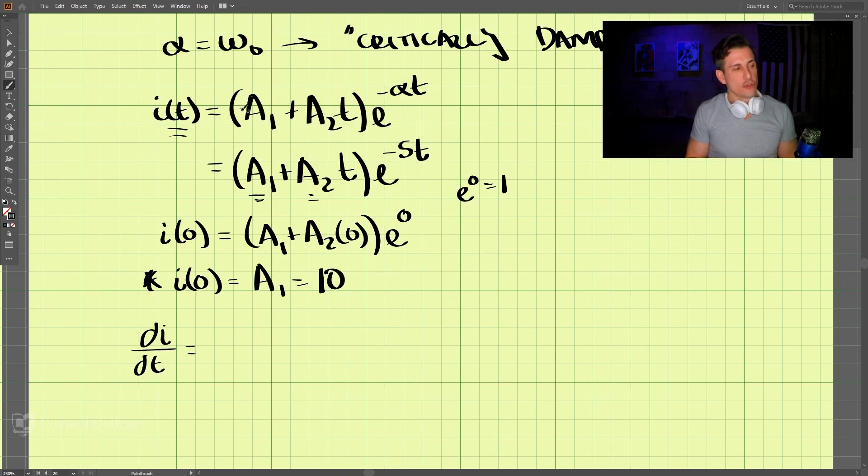So if we take the derivative of this equation, we get, so we have A1 times alpha times e to the negative alpha t plus the derivative of the first is A2 times the second alpha t plus the derivative of the second times the first, which is A2t.